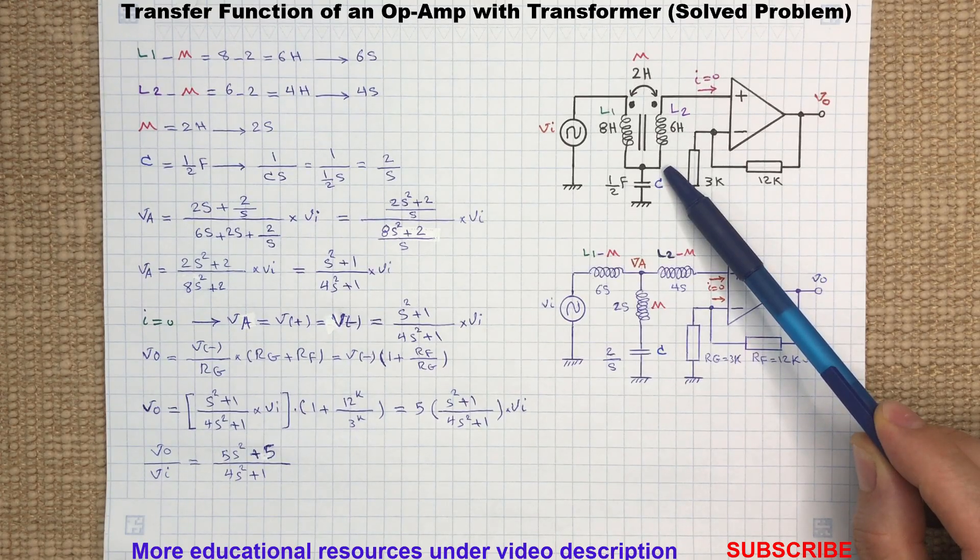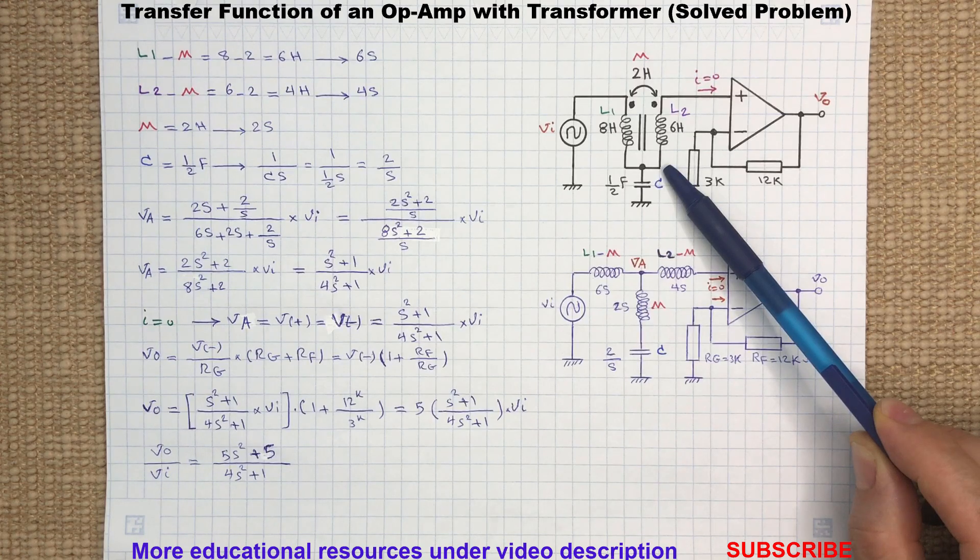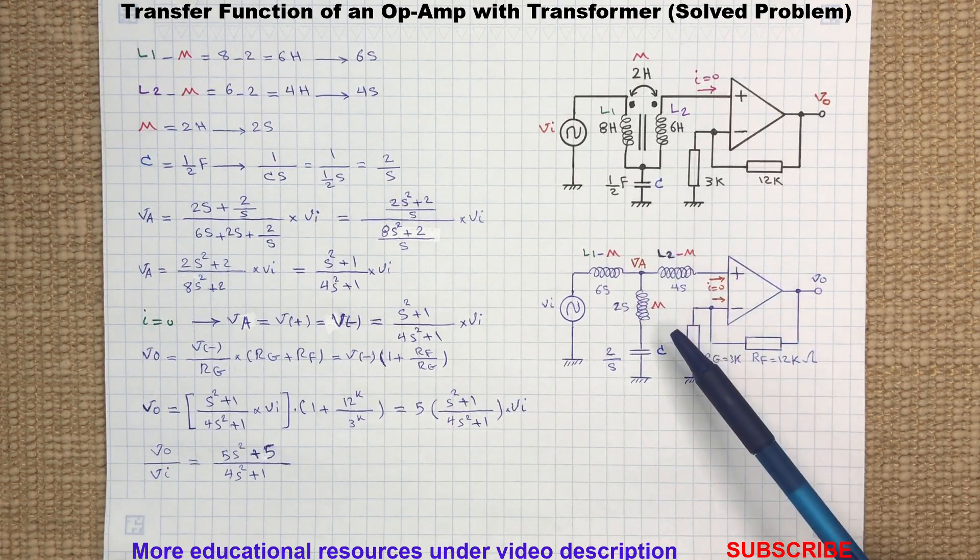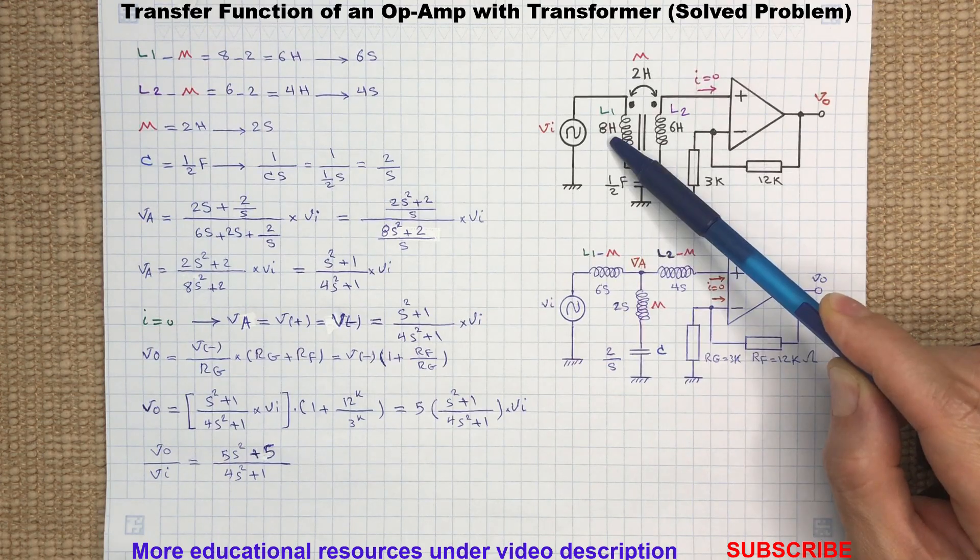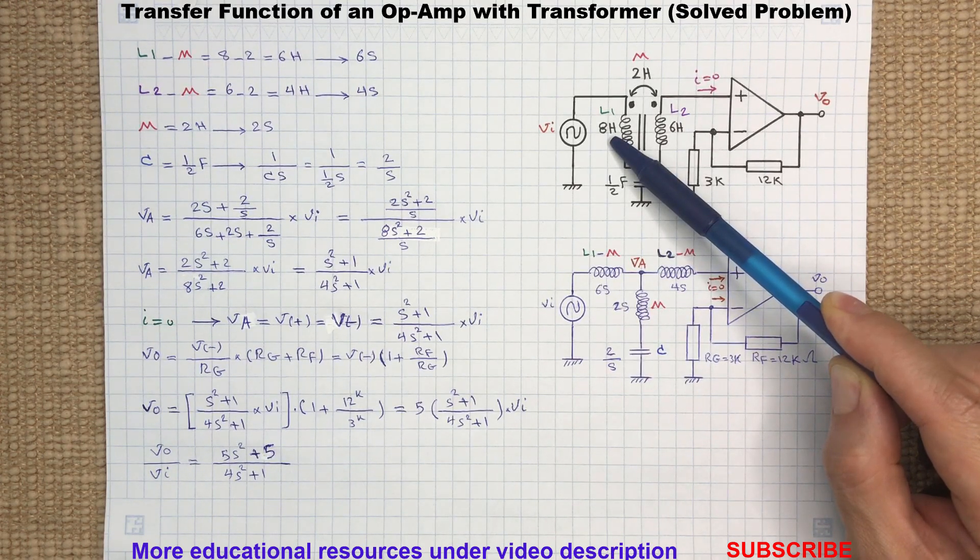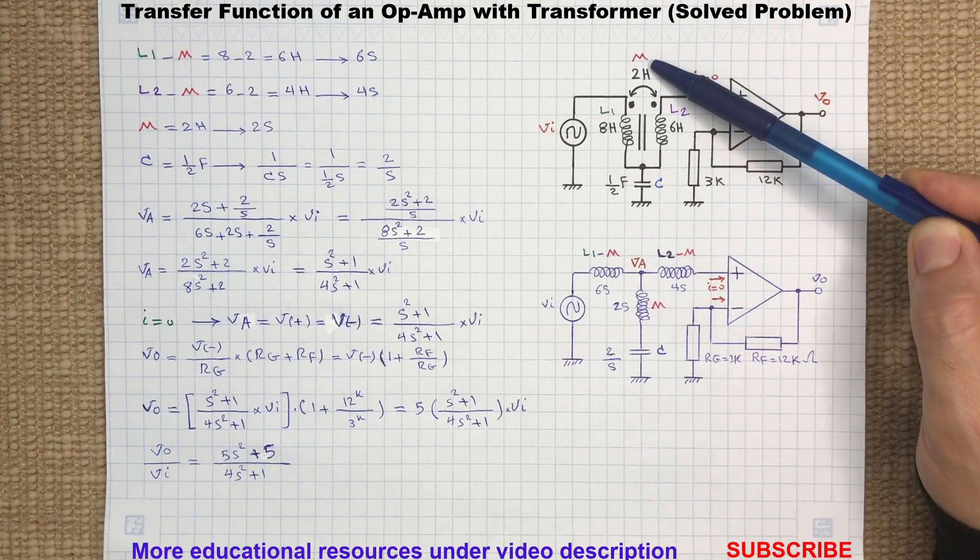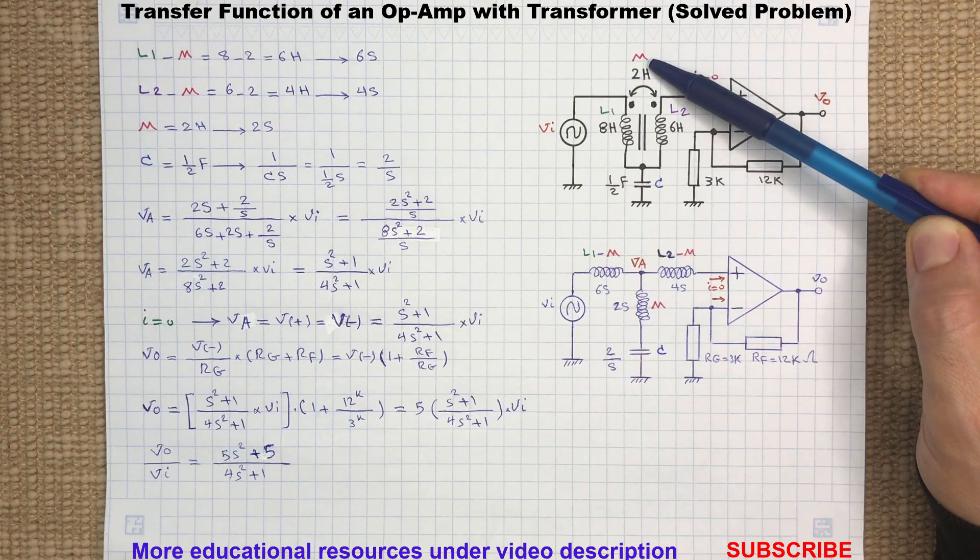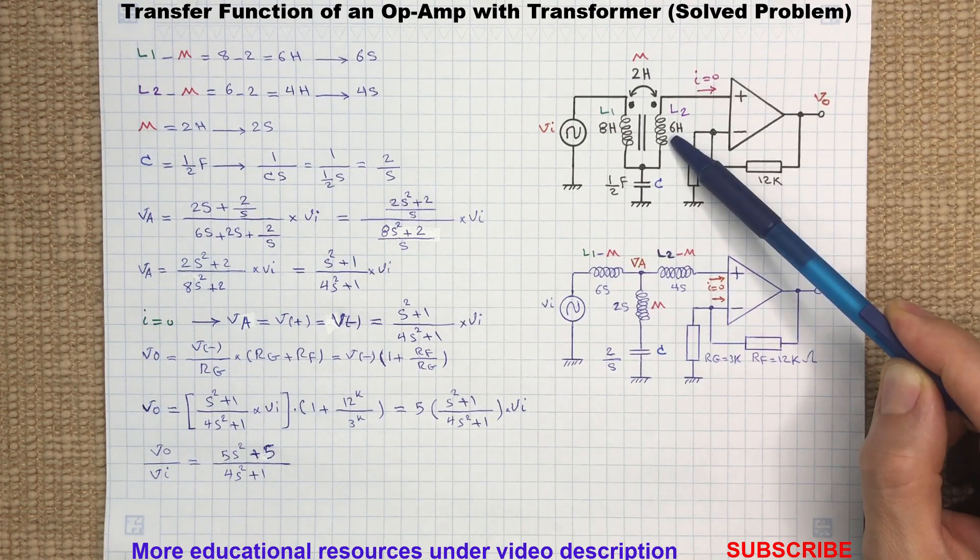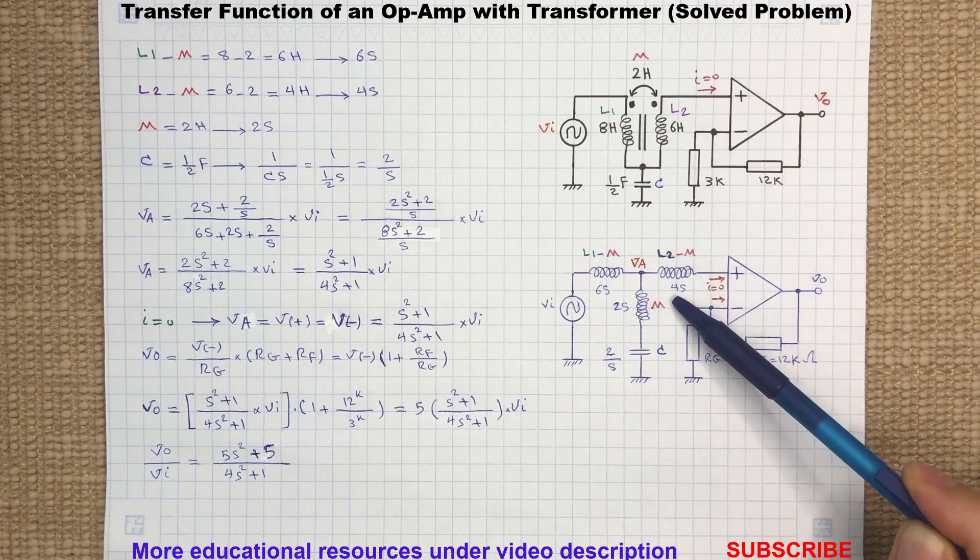To find the output to input voltage transfer function of this circuit, first we simplify the transformer to its T-model equivalent. The primary side inductor L1 will be replaced by L1 minus M, and M is the mutual inductance between the primary and secondary. The secondary side inductor L2 will be replaced by L2 minus M.